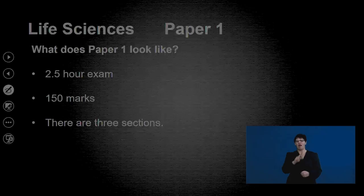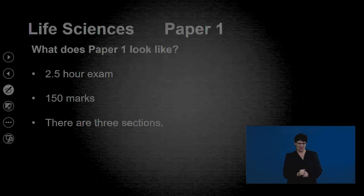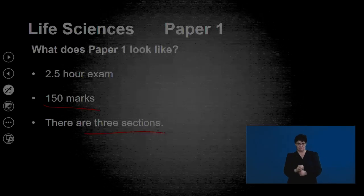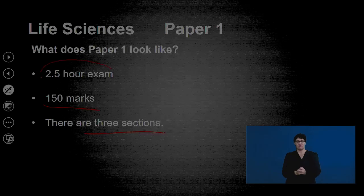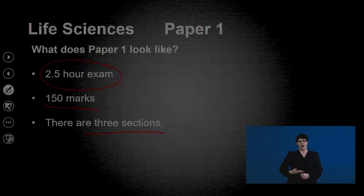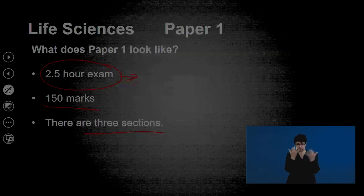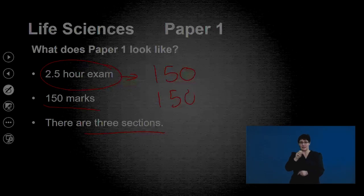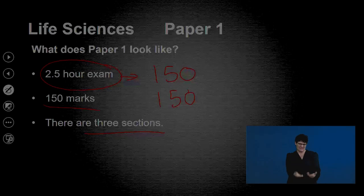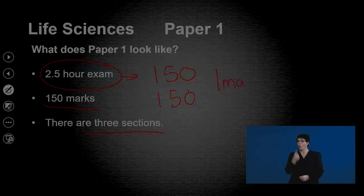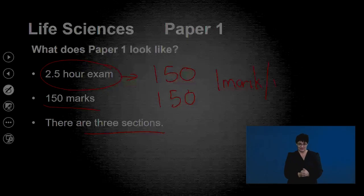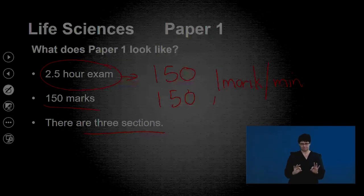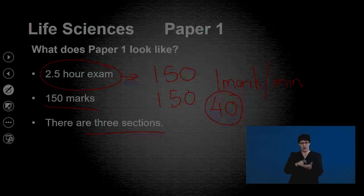When we look at Life Sciences Paper 1, we know that this is a two and a half hour exam. It is 150 marks and there are three sections. If you were to break that up, you would know that that's 150 minutes to complete 150 marks — a ratio of a mark per minute. So a question worth 40 marks should take you 40 minutes.